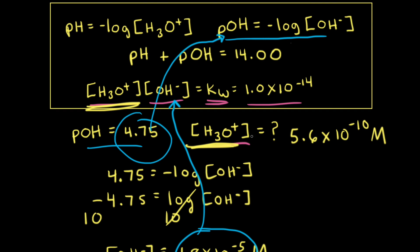Even though we used two different equations from the first method, we ended up with the same answer: 5.6 times 10 to the negative 10th molar. So it doesn't really matter which approach you take.